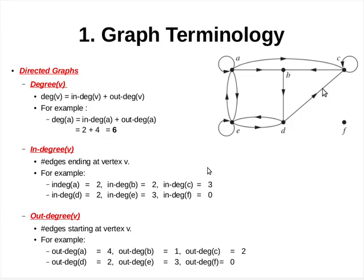For the given graph, the out-degree of vertex A is equal to 4. The first edge is from A to itself, the second edge is towards B, the third edge is towards C, and the fourth edge is towards E. All these four edges originate from vertex A. As mentioned earlier, the degree of vertex A equals the in-degree of vertex A plus the out-degree of vertex A, which is 2 plus 4, giving a total degree of 6.